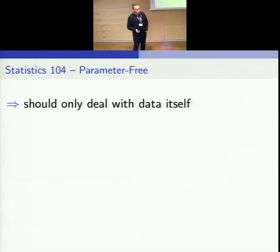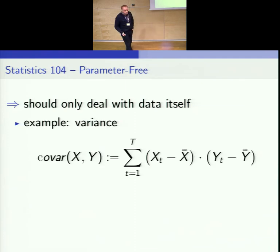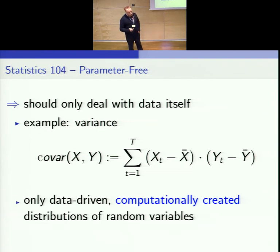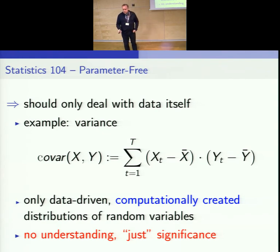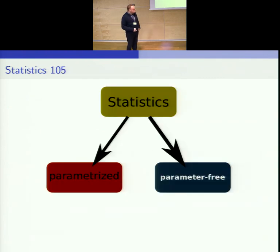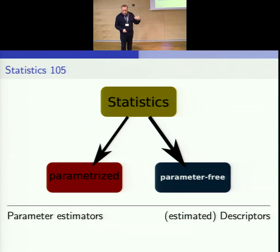Then there is parameter-free statistics, where you just look into the data and it's completely data-driven. One typical example would be computing the covariance of two time series: you take the difference to the mean of both time series, make that sum, and you are done. The problem is you have to gauge that value—if I tell you these two time series have a covariance of 3.5 and these two are 4.5, you wouldn't know which is stronger. You need a base level that you computationally create.